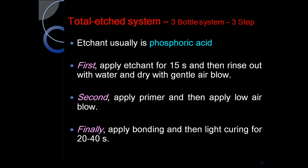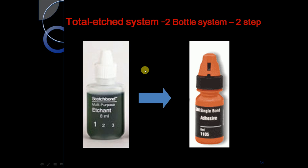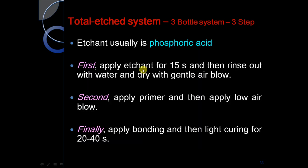The total etching system, or 3-bottle/3-step system, usually uses 37% phosphoric acid. First apply etching for 15 seconds, then rinse with water and dry with a gentle air blow. Second, apply primer, then apply a light air blow. Finally, apply bonding and light cure for 20 to 40 seconds.